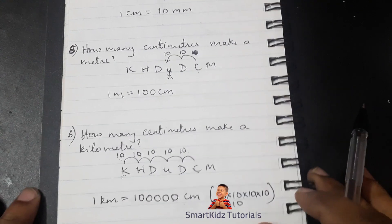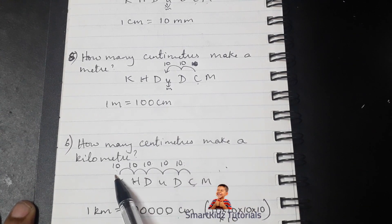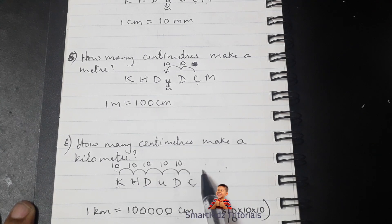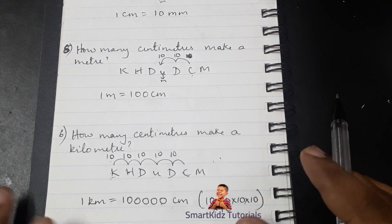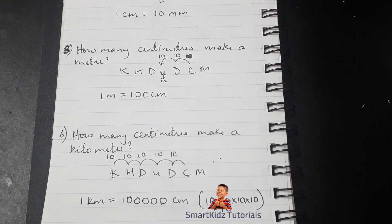So remember: when we move towards our right we divide, and when we move towards our left we multiply. How many tens we multiply or divide by depends on the number of places you are moving. I hope this video has been useful in helping you understand how to convert from one unit into another using the mnemonic we learned about King Henry. If you found this video helpful, please give it a like, subscribe to the channel, and share it with your friends so they can benefit too. Thank you and keep watching for more such videos.